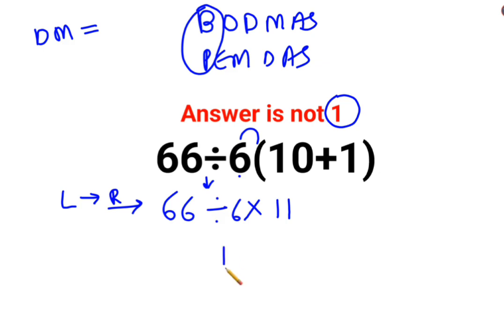So 66 divided by 6 is basically 11 multiplied by 11. So the answer for this question is supposed to be 121.